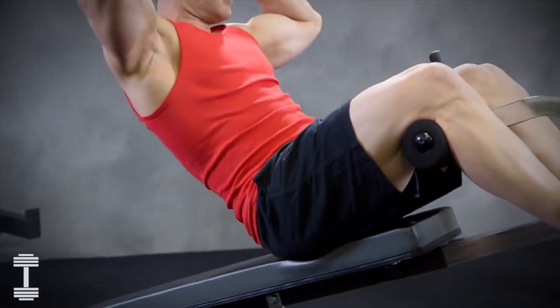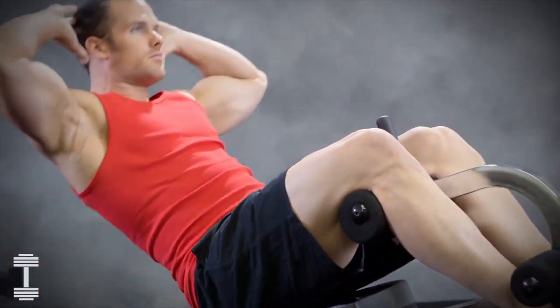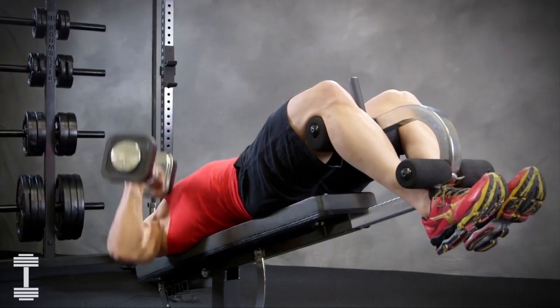The crunch sit-up attachment is perfect for holding you on the bench for ab work but also is helpful for decline angle bench presses.